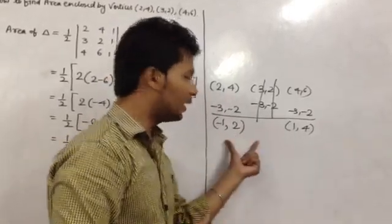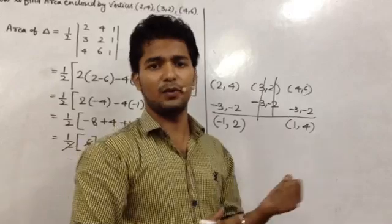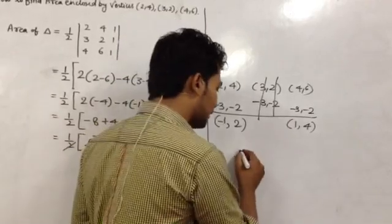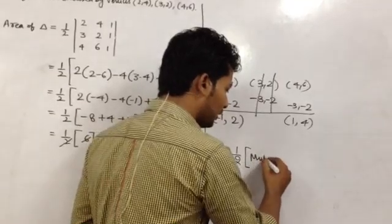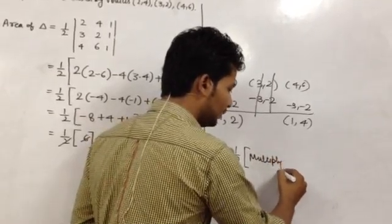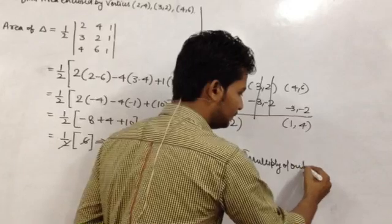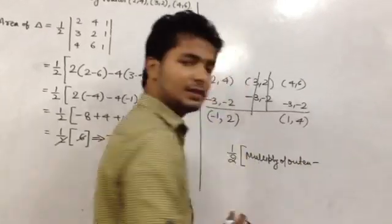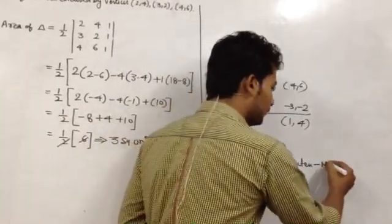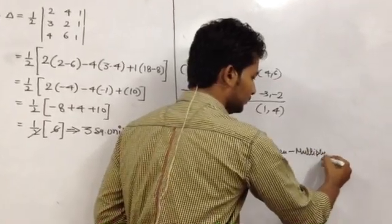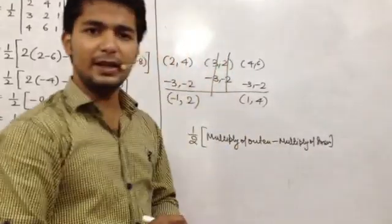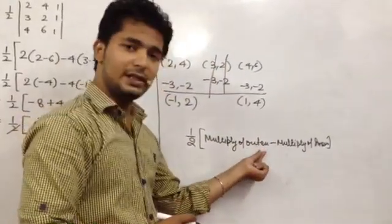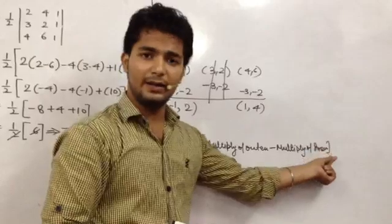When we reach the condition, we can solve: 1 by 2, multiply of outer minus multiply of inner, or you can say product of outer digits minus product of inner digits.